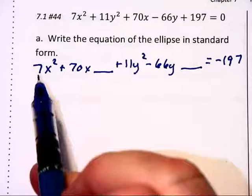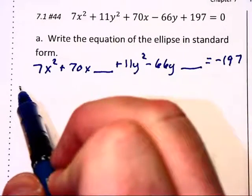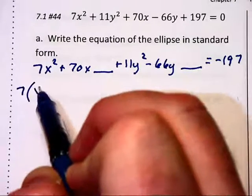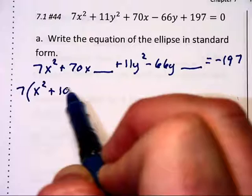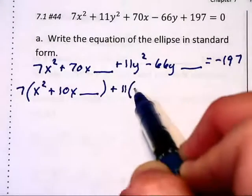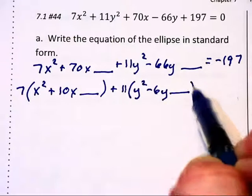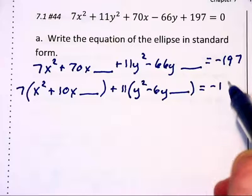The next thing I'm going to do is factor out the leading coefficients in front of x² and y². This will give us 7 times (x² + 10x) leave a blank, plus 11 times (y² - 6y) leave a blank, close parentheses, equals negative 197.